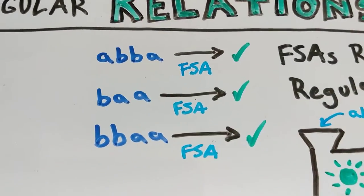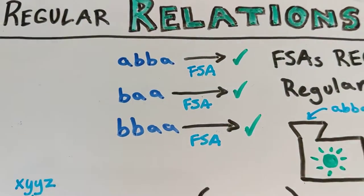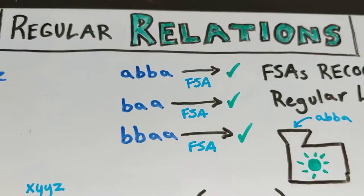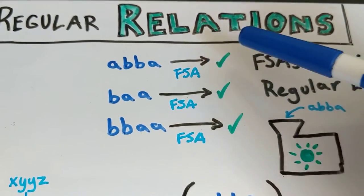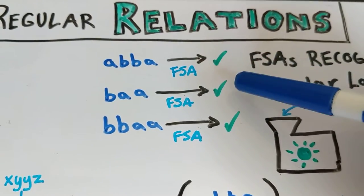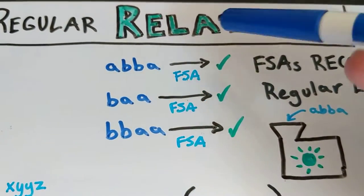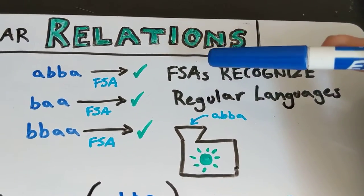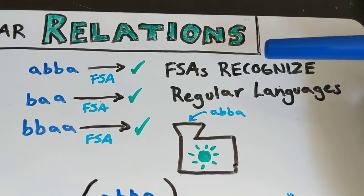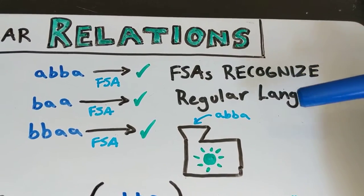When we look at what a finite state automaton is doing we think of it as something where you feed it a string and the finite state automaton tells you that string is in the language or that string isn't in the language. In this way what a finite state automaton does is recognize strings that are members of regular languages.